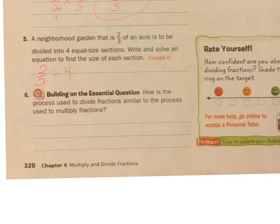So 2 thirds divided by 4. I'm going to make that into a fraction, then 2 thirds times 1 over 4. I can reduce this and this.